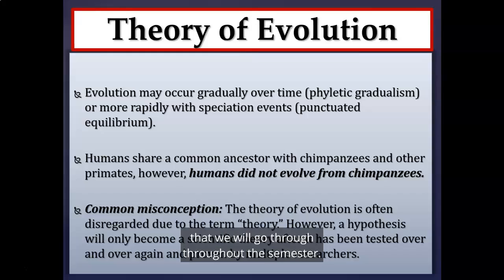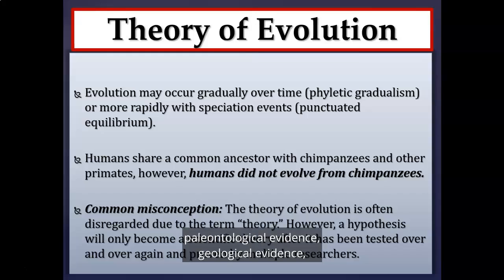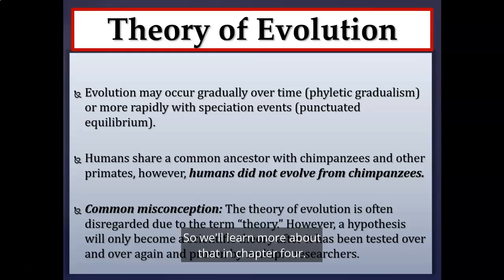There is quite a bit of evidence for evolution that we'll go through throughout the semester — fossil evidence, paleontological evidence, geological evidence, and we can even use math to prove evolution. We'll learn more about that in Chapter 4. A hypothesis only becomes a scientific theory after it has been tested repeatedly and proven to be supported by multiple researchers in multiple settings.